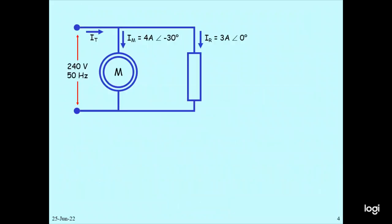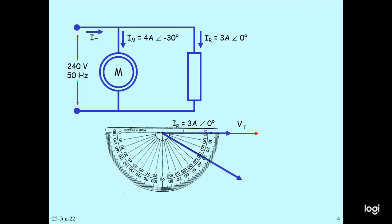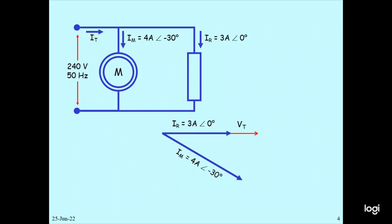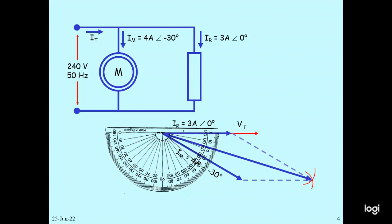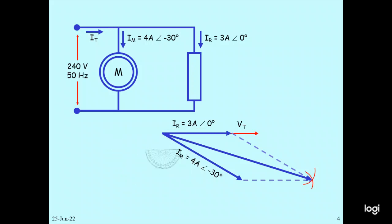On the motor diagram, the supply voltage is 244V at 50 Hz. The total motor current is 4 amperes at some negative angle, and the resistor current is 3 amperes at zero degrees. The VDS is calculated and IL is 3 amperes at zero degrees. Drawing the phasor, the angle with I1 is 4 amperes at minus 30 degrees. You have to make the parallelogram, and the total current ID equals 6.75 amperes at minus 70 degrees.